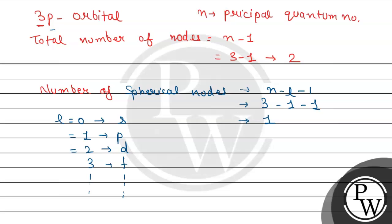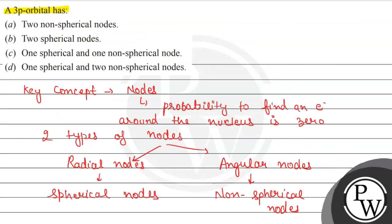If we have a total of 2 nodes and 1 is a spherical node, then the non-spherical nodes will equal the total number of nodes minus the spherical nodes, which means 2 minus 1 equals 1. So by this we can say the 3p orbital has 1 spherical node and 1 non-spherical node, and the final answer is option C.